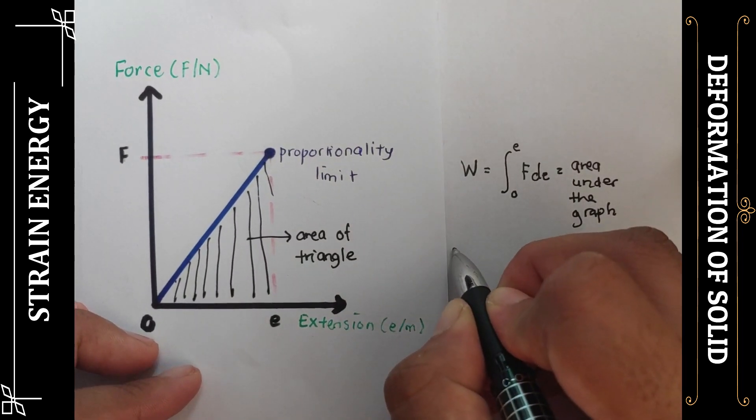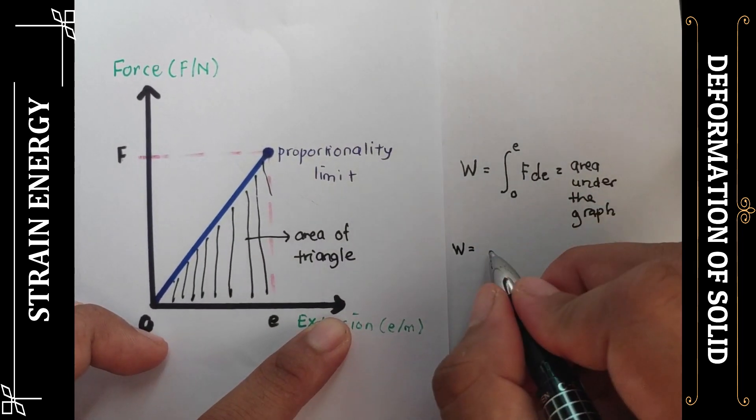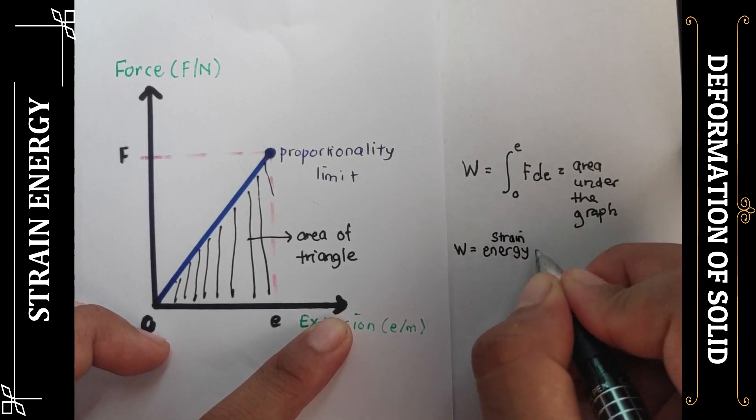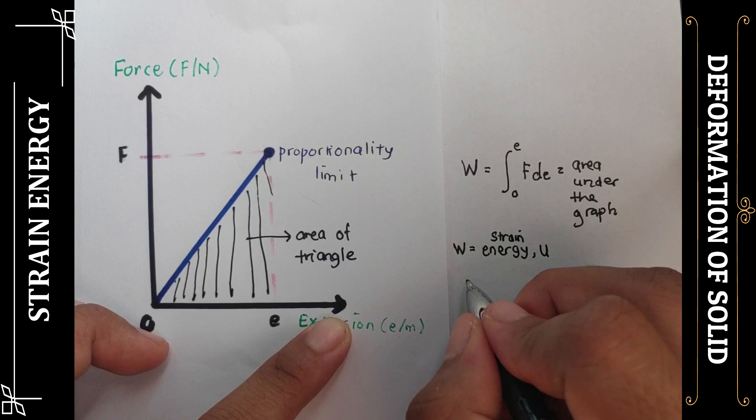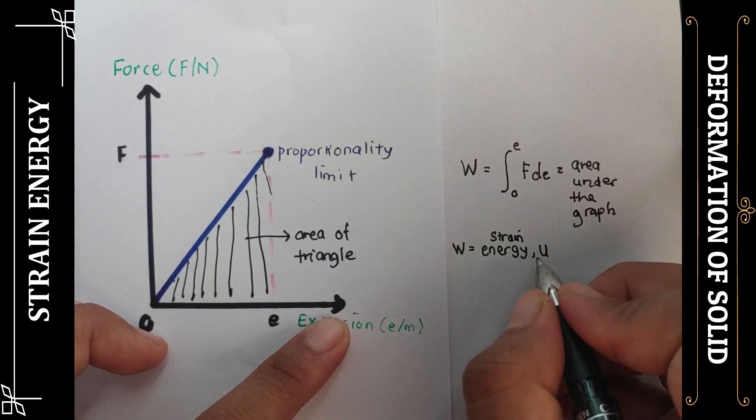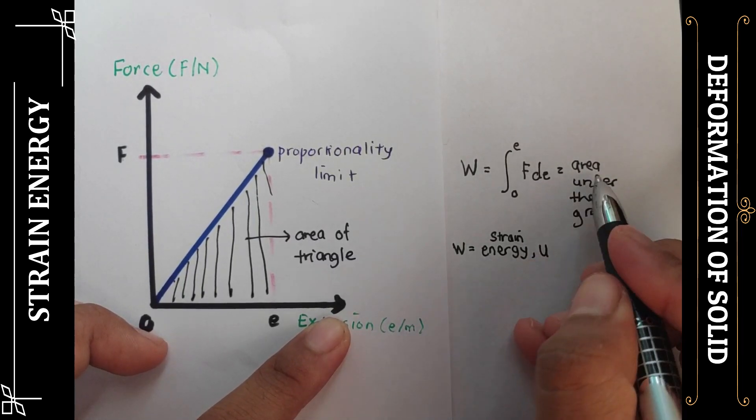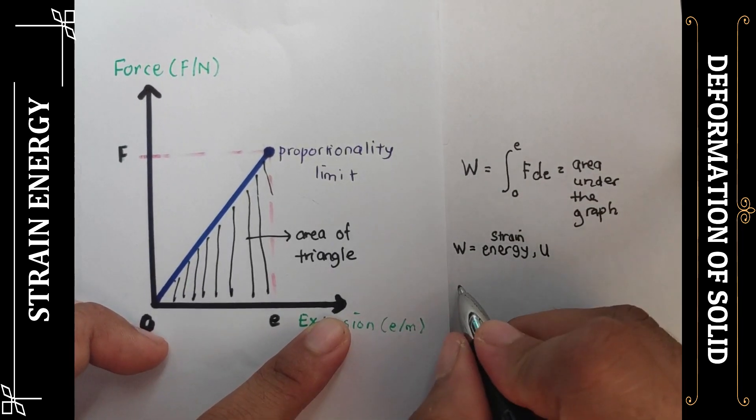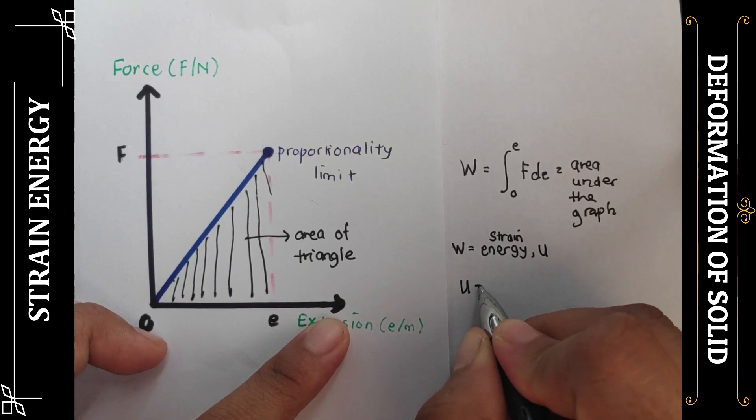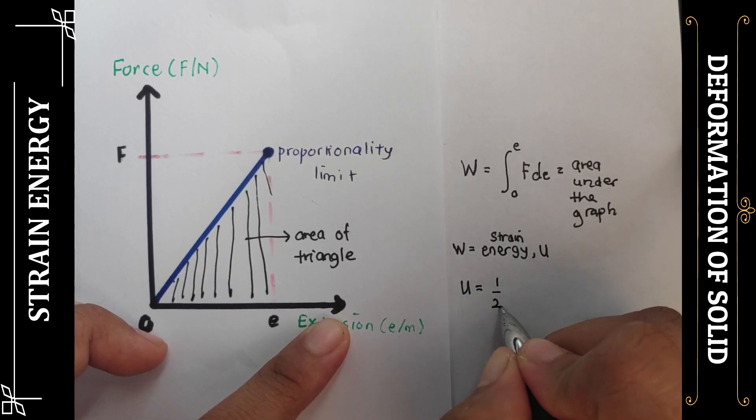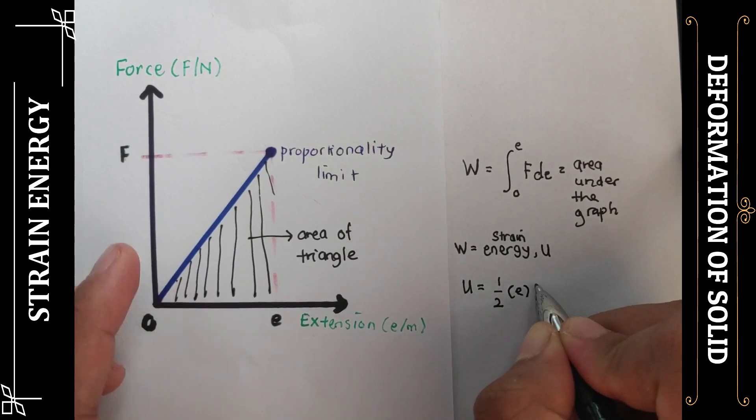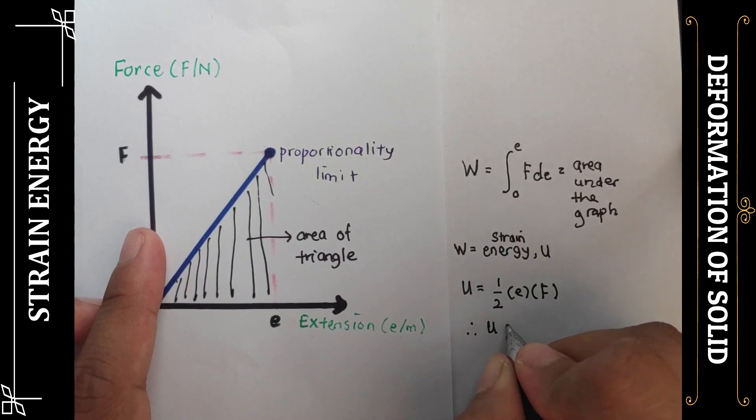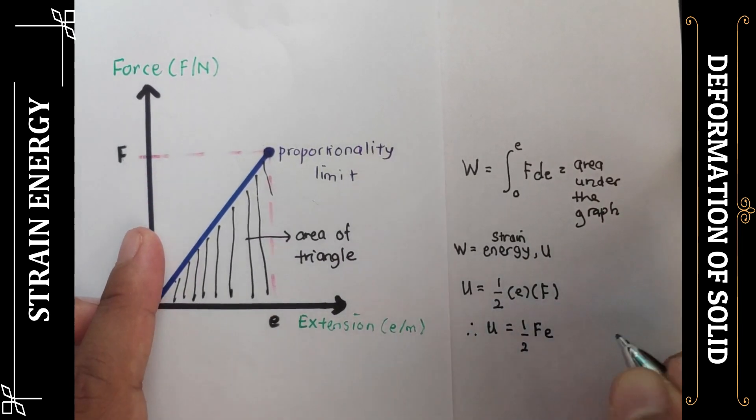Work done in this case equals energy, or we call it strain energy with symbol U. So W equals strain energy U, and strain energy U equals area under the graph. The area under the graph is the area of the triangle, so we can write U as equals to half E times F. Therefore, strain energy U equals 1 over 2 F E.